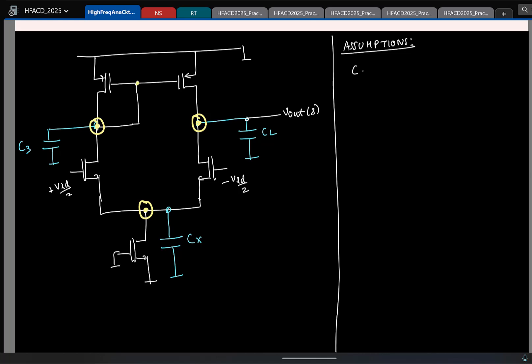So, this is your 5 transistor OTA. If you remember the assumptions we started with, let me write them once again. First, we ignored the CGD, that is the drain to gate capacitance here. And then we further made an assumption that the load capacitance is much greater than the other two capacitances, and we assume that the poles are apart.